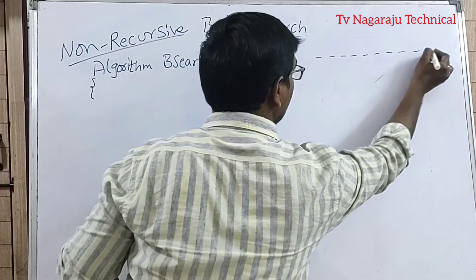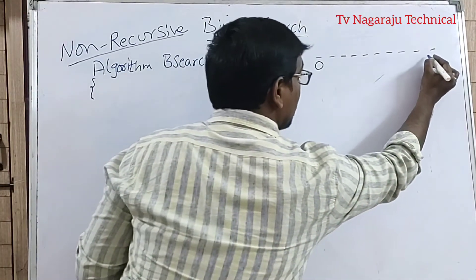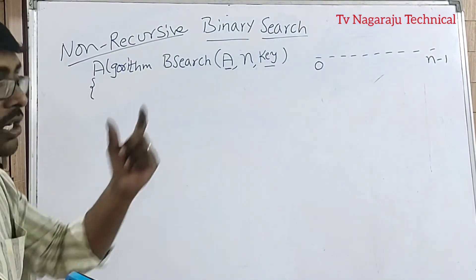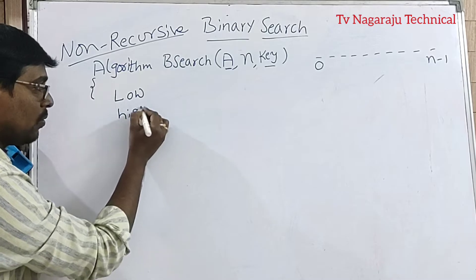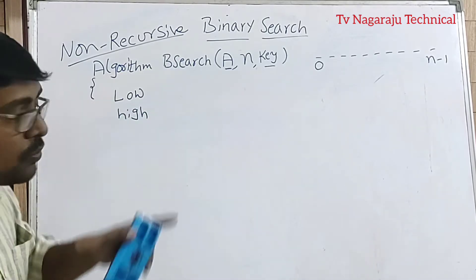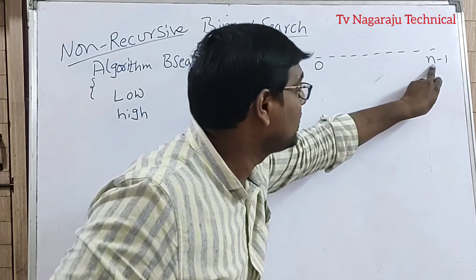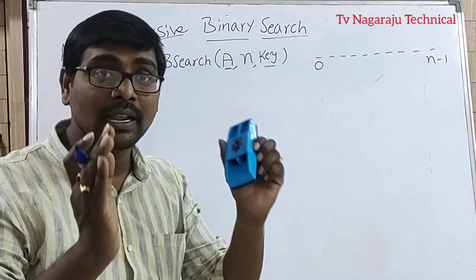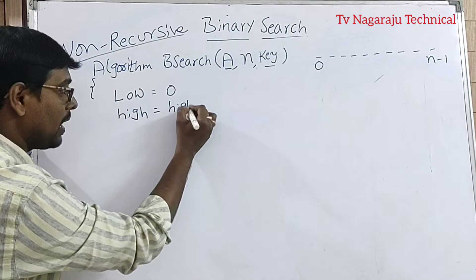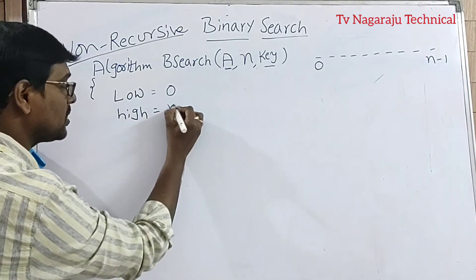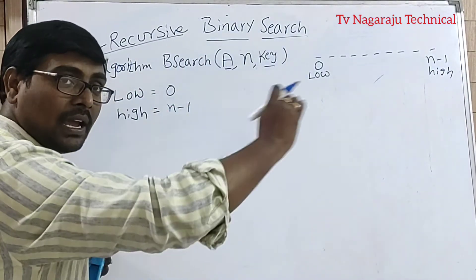Assume these are the set of elements. The starting index is 0 and the last index is n minus 1, so the array starts from 0 and ends at n minus 1. I am assuming two variables: low and high, which are used to traverse the list. Initially, low is equal to 0 and high is equal to n minus 1. That is the range of elements we want to search.